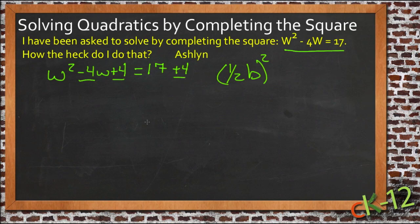That's the extra step that's required when you have an actual equation. So now we have w squared minus 4w plus 4 equals 21, and this is now a perfect square.